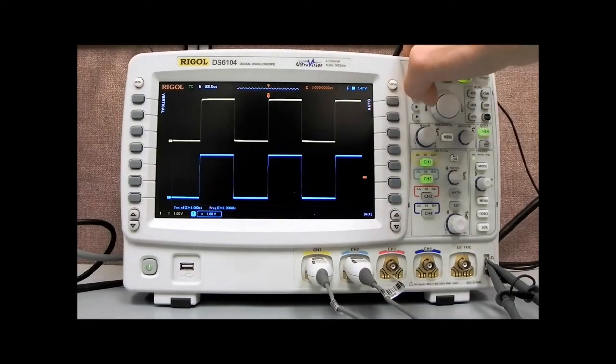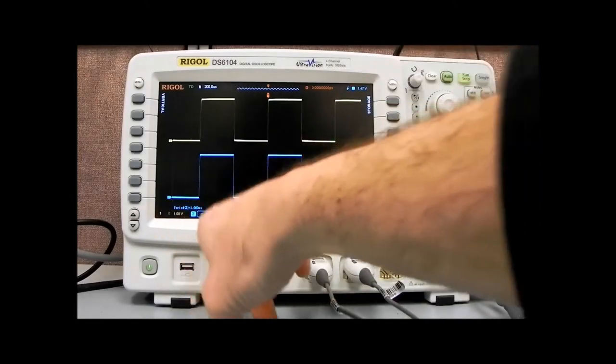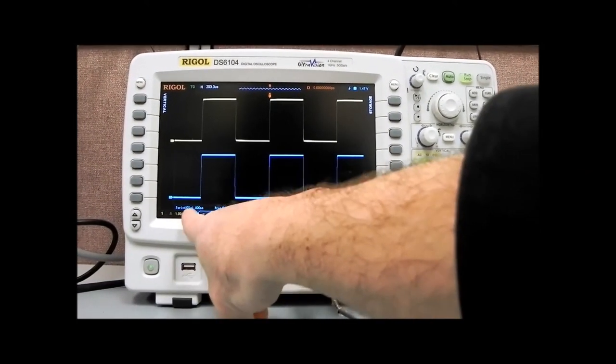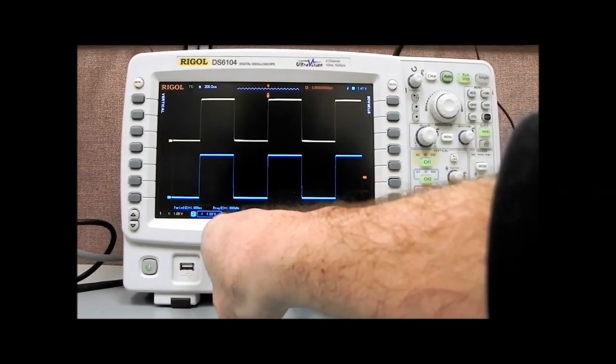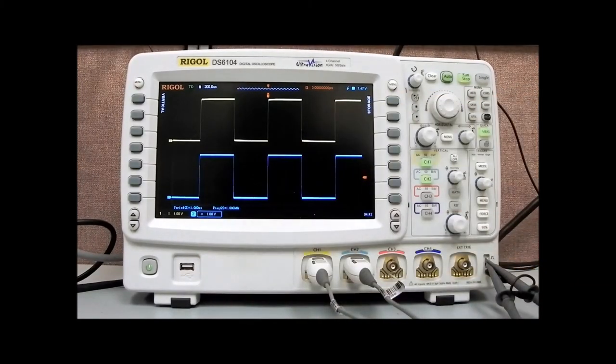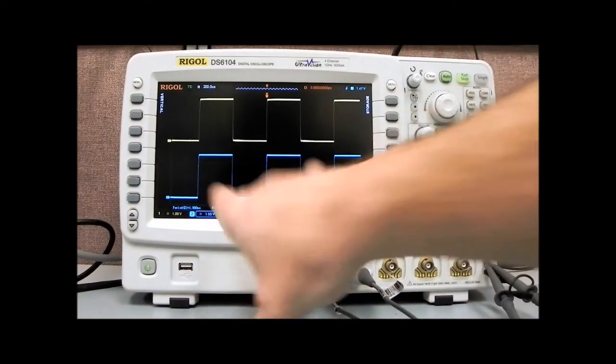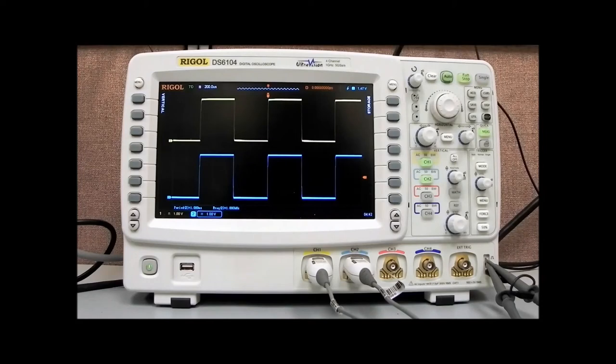I'm going to select a smaller set, and now you'll see that we have channel 2 highlighted. It's also brought up automatically two readings for the period and the frequency of channel 2. Remember, I said that channel 2 was connected to that probe compensation point, which is a 1 kilohertz signal, and you can see here we are reading 1 kilohertz as our frequency readback.